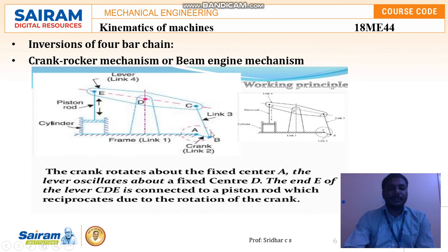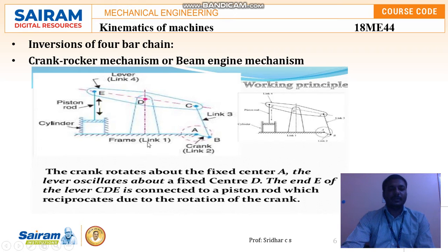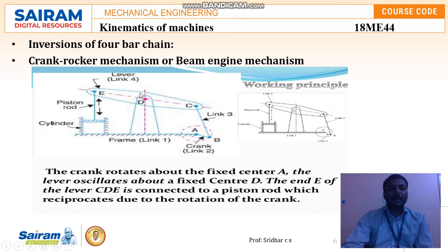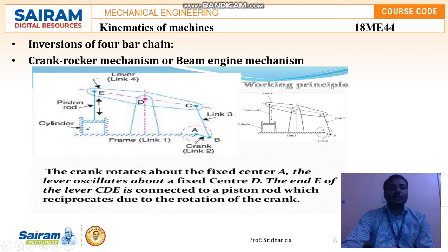In this mechanism, link one is the fixed link — normally we call it the frame. Link two is the crank, connected from point A to B. Link three is connected from point B to C. Link four, connected at C, is called the lever. On the other side of the lever it is connected to the piston, and the piston is connected to the cylinder.